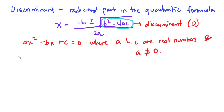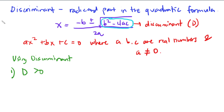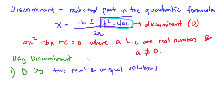We use the discriminant to characterize the roots. For number one: if your discriminant D is greater than zero, it means that you have two real and unequal solutions.